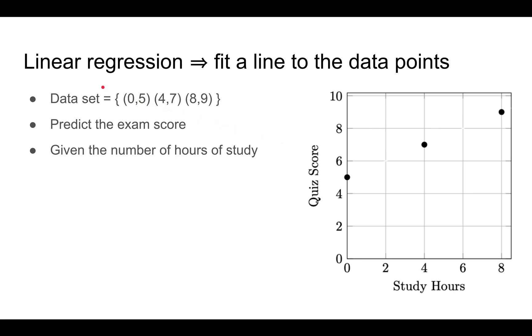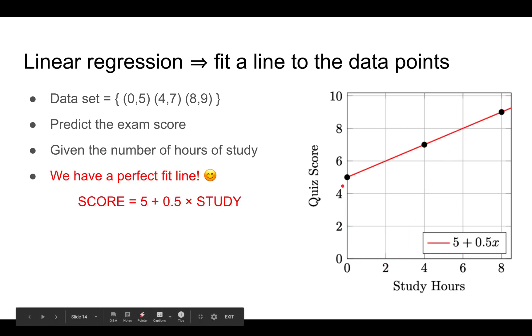The basic idea of linear regression is to fit a line to the observed data points. For example, let's say we have a very simple data set with three points, and we want to predict the quiz score as a function of the number of hours of study. In this case, it's very easy because there's a line that fits these three points exactly. The equation of the line is score equals 5 plus 0.5 times study.